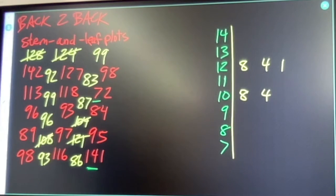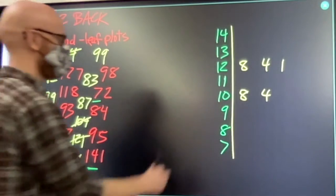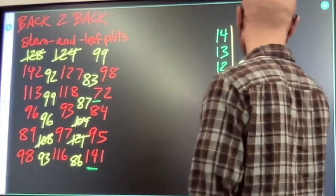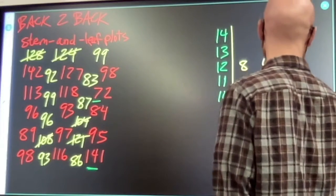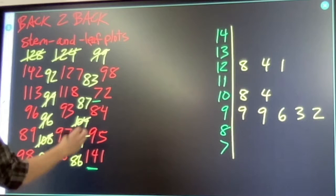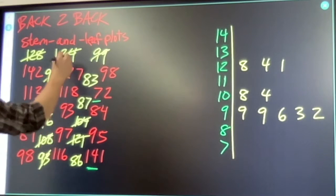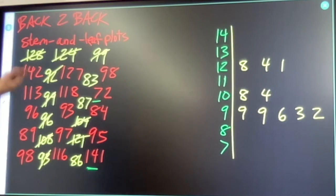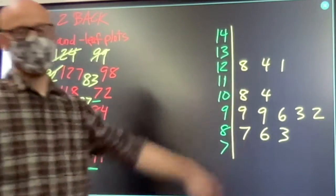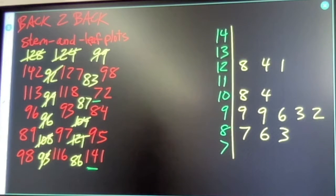99, 99, 96, 93, 92. So, 87, 86, 83. That's a stem and leaf plot for my yellow numbers.